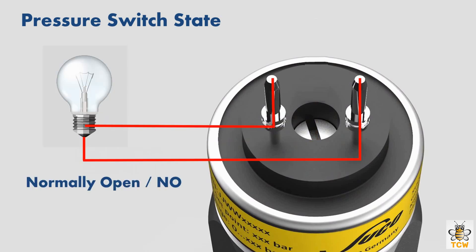Pressure switches that only have two terminals have their state predetermined — whether normally open or normally closed only.